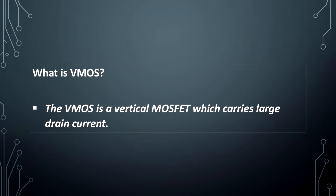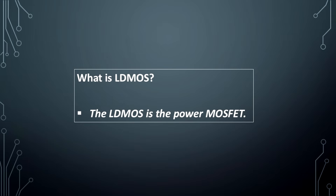What is VMOS? The VMOS is a vertical MOSFET which carries large drain current. What is LDMOS? The LDMOS is the power MOSFET.